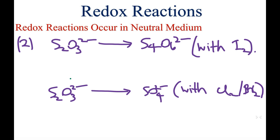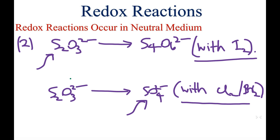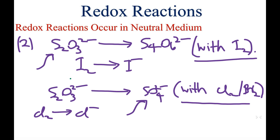In neutral medium, thiosulfate ion (S₂O₃²⁻) becomes S₄O₆²⁻ in the presence of iodine gas. Thiosulfate can also become sulfate ion in the presence of chlorine or bromine gas. In these reactions, I₂ becomes I⁻ and Cl₂ or Br₂ becomes Cl⁻ or Br⁻.